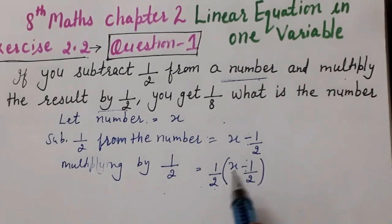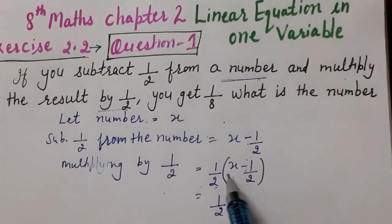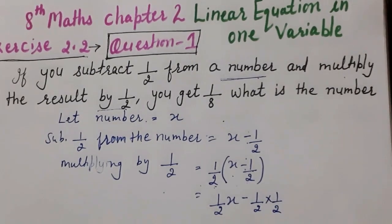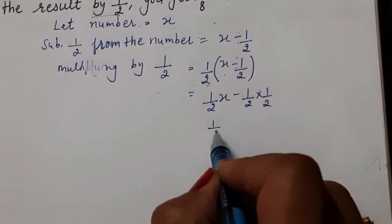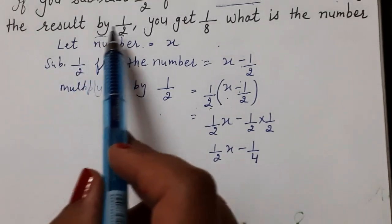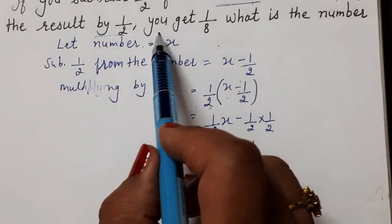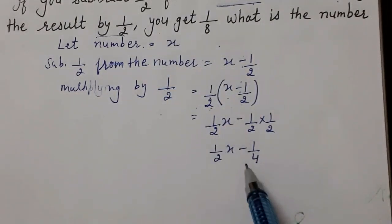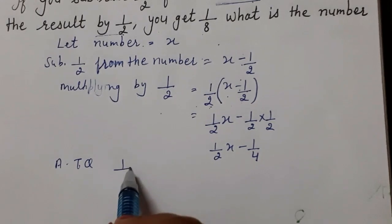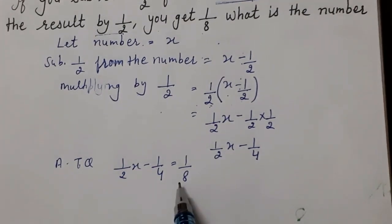So, 1/2 multiply करेंगे — 1/2 × x = 1/2 x, और 1/2 × 1/2 = 1/4. तो हमारे पास आ जाएगा 1/2 x minus 1/4. यहाँ तक हमने solve कर लिया। According to question, multiply करने के बाद आना चाहिए 1/8, तो equation बनी: 1/2 x minus 1/4 = 1/8.